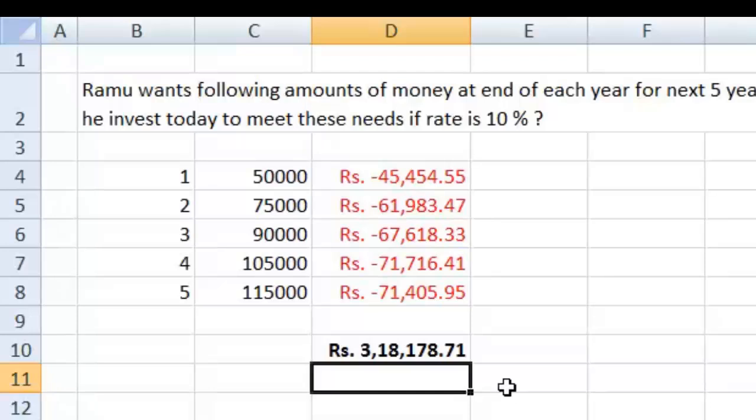You need 3,18,178 rupees which can be invested to get 50,000 at the end of year 1, 75 at the end of year 2 and so on. Now let's go on to a function called NPV which will help us do the same thing in relatively lesser time and easily.